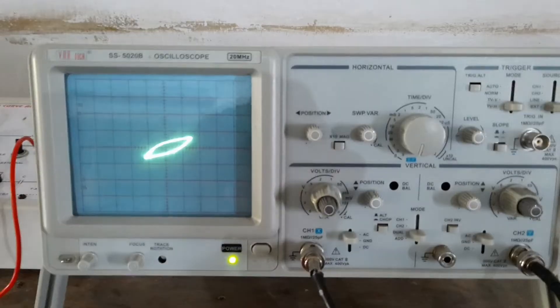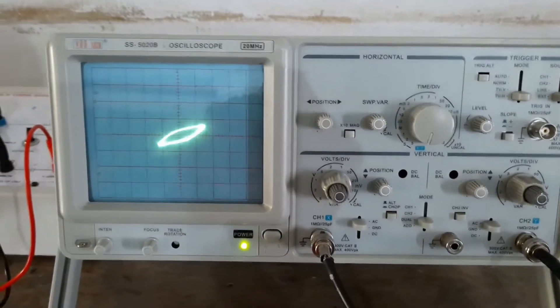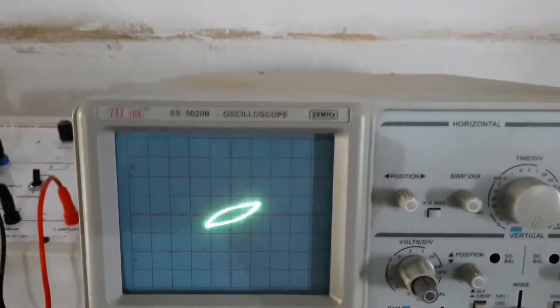So there we go. We have got the BH curve. This is for 3 volt. Okay, we have kept the voltage at 3 volt.